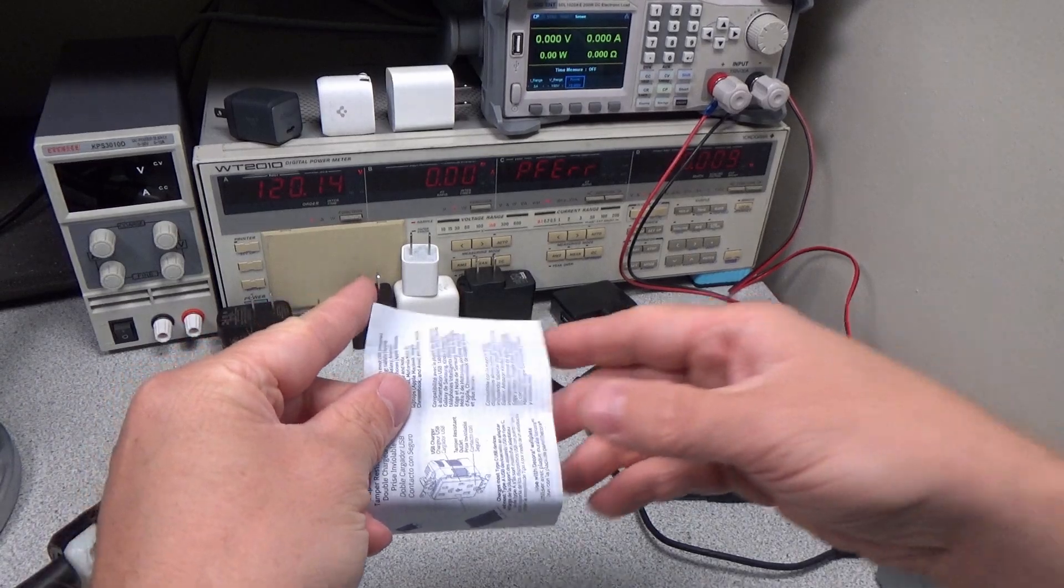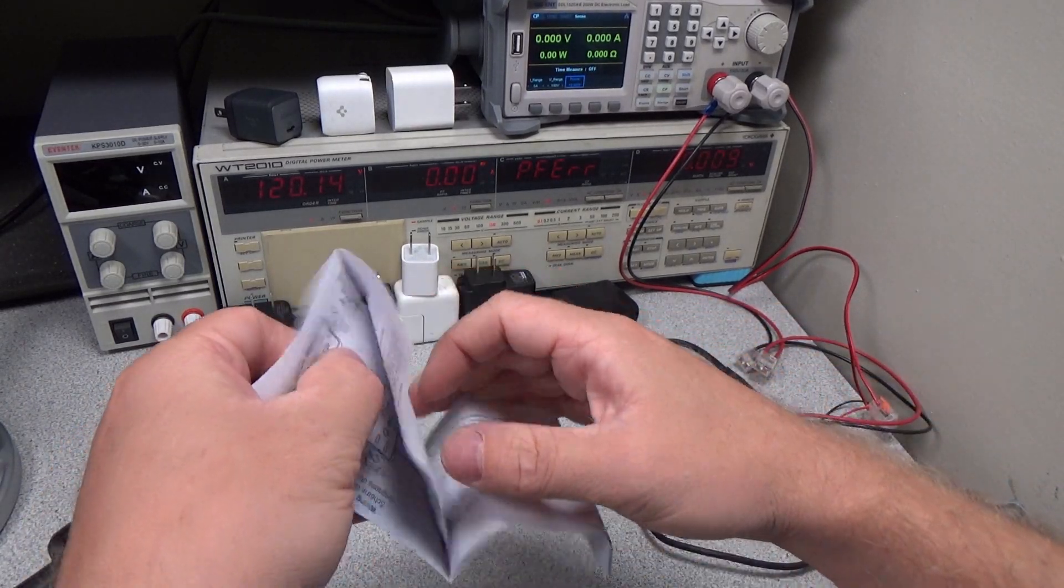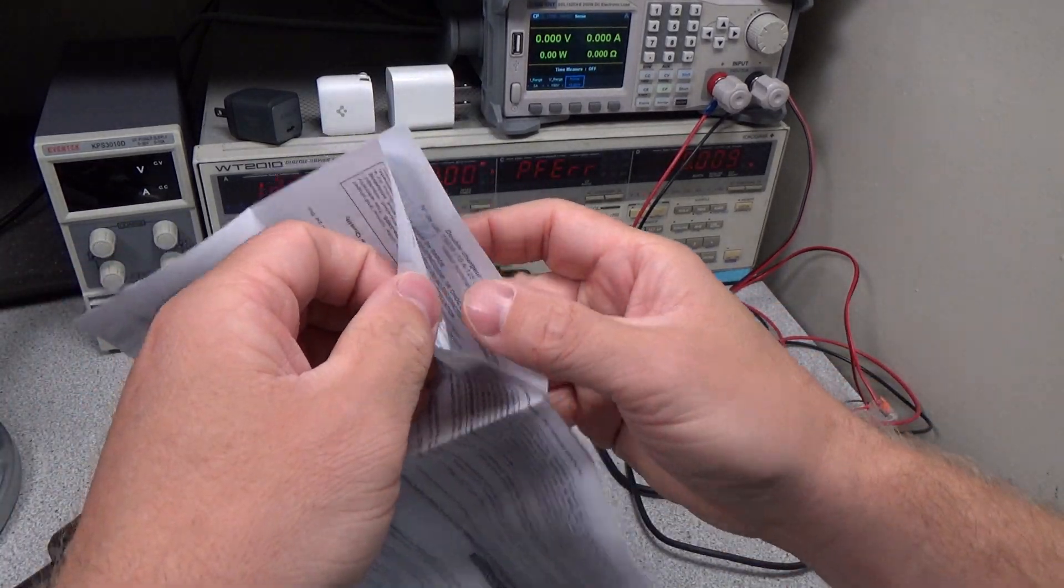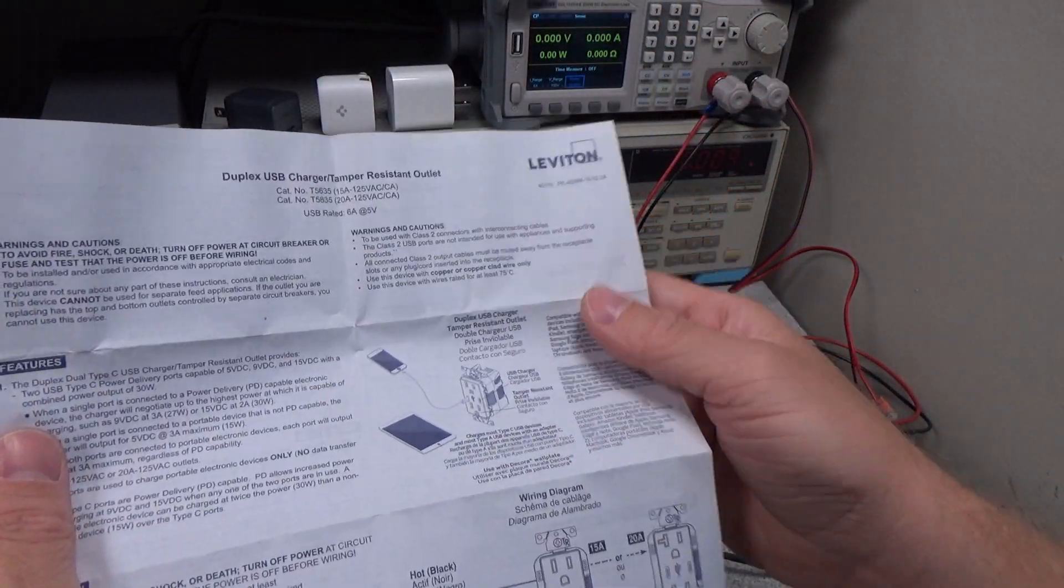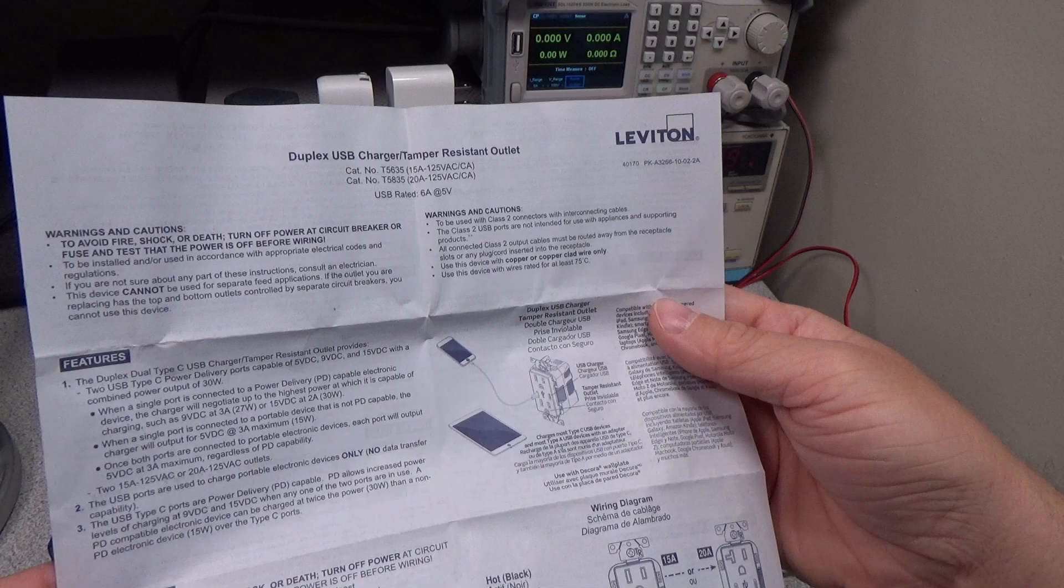Again, taking a look at the user manual, just kind of a rough overview. Very similar to the TE5633 device. This one does talk about the volts and power it can put out on each of the ports, though. And it does give you some little things where it says,